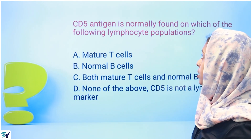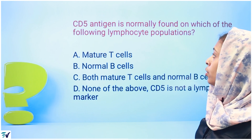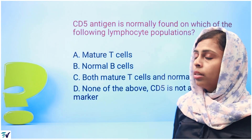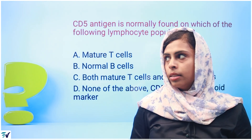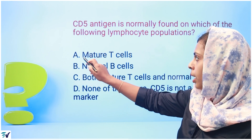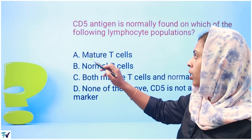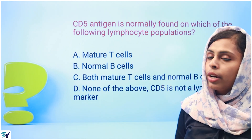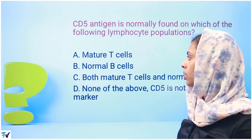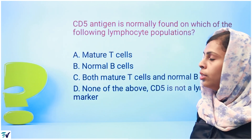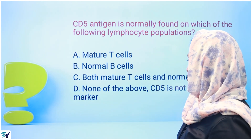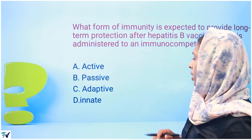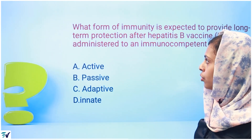Next question: CD5 antigen is normally found on which of the following lymphocyte populations? Mature T cells are the answer, because normal B cells are absent for CD5 and mature T cells are CD5 positive.